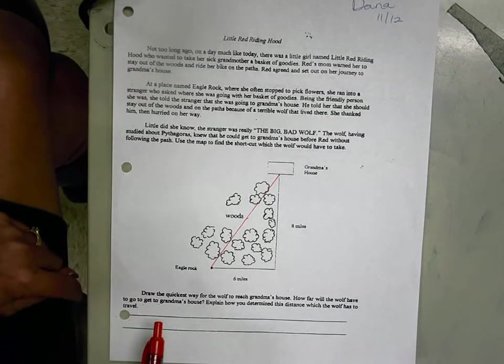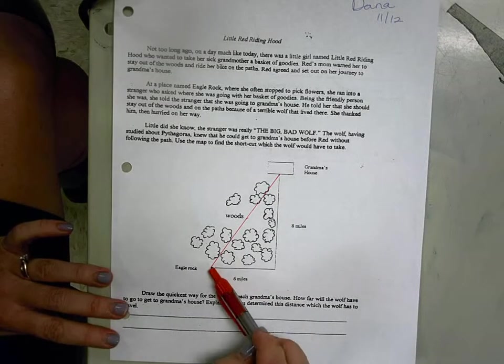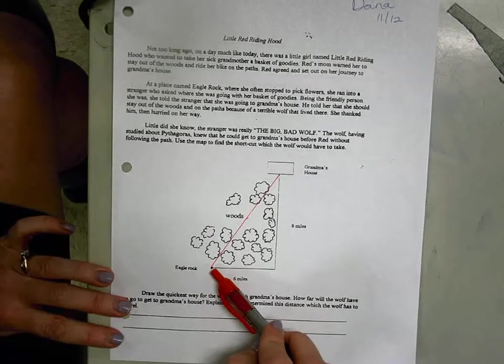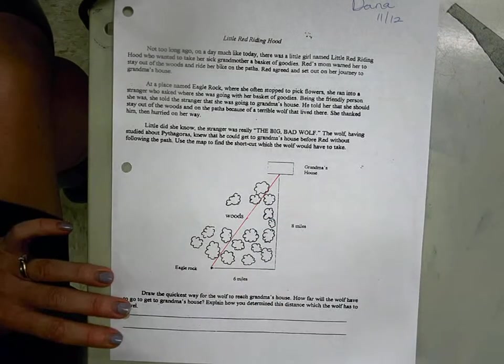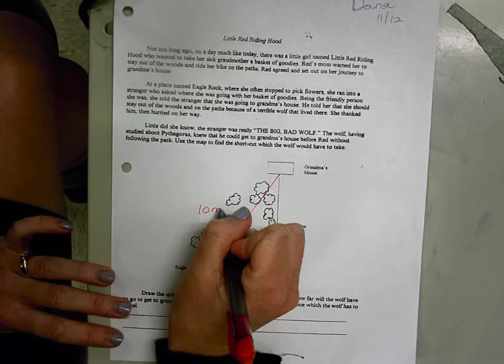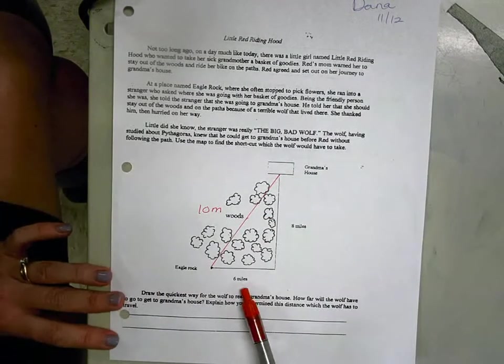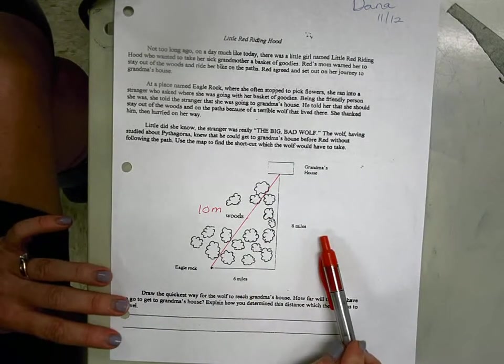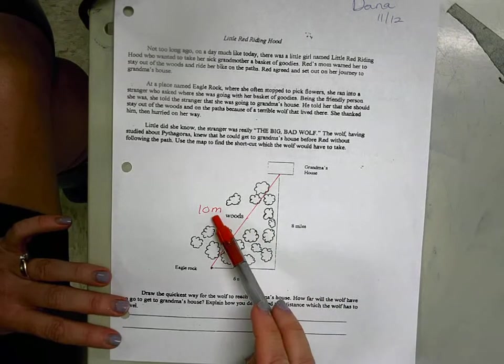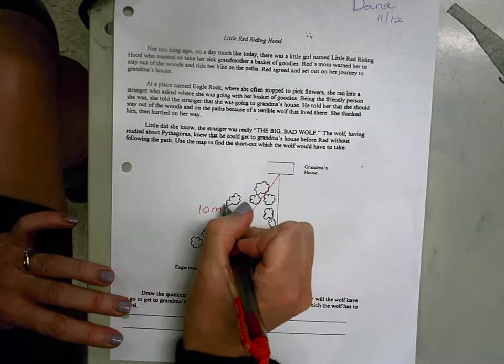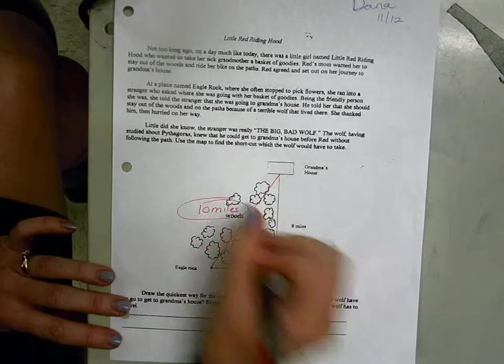This problem was from earlier in the week, where the first step was we had to find the distance the wolf was going to travel if he was going to go straight from Eagle Rock to Grandma's house. And most people found that 10 miles really easily, either substituting 6 squared and 8 squared, or noticing you could divide by 2 and then get a 3, 4, 5 Pythagorean triple. So 10 miles was the wolf's distance.